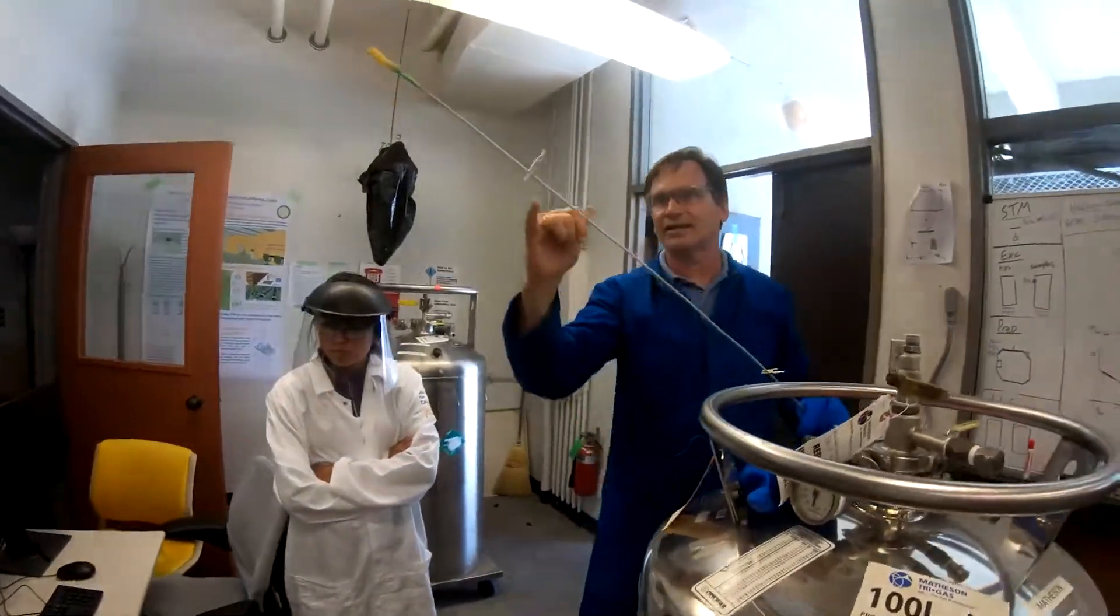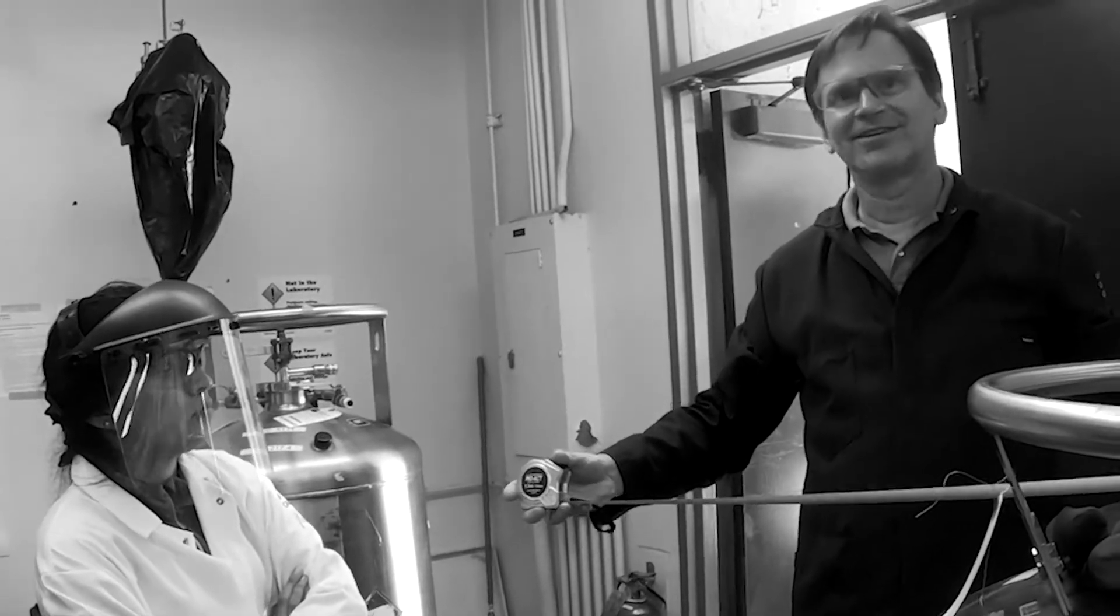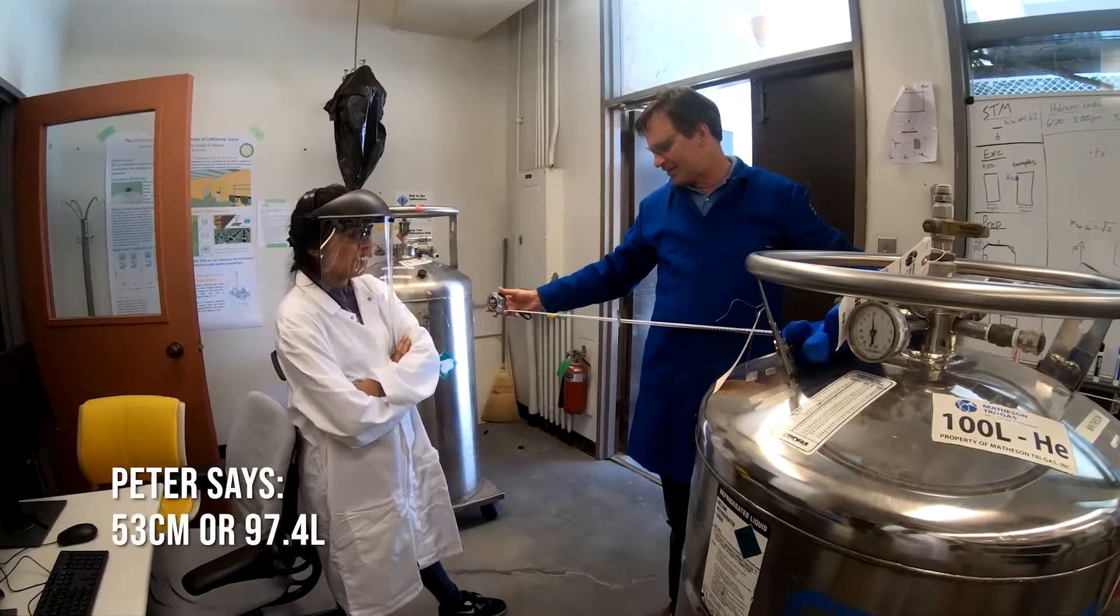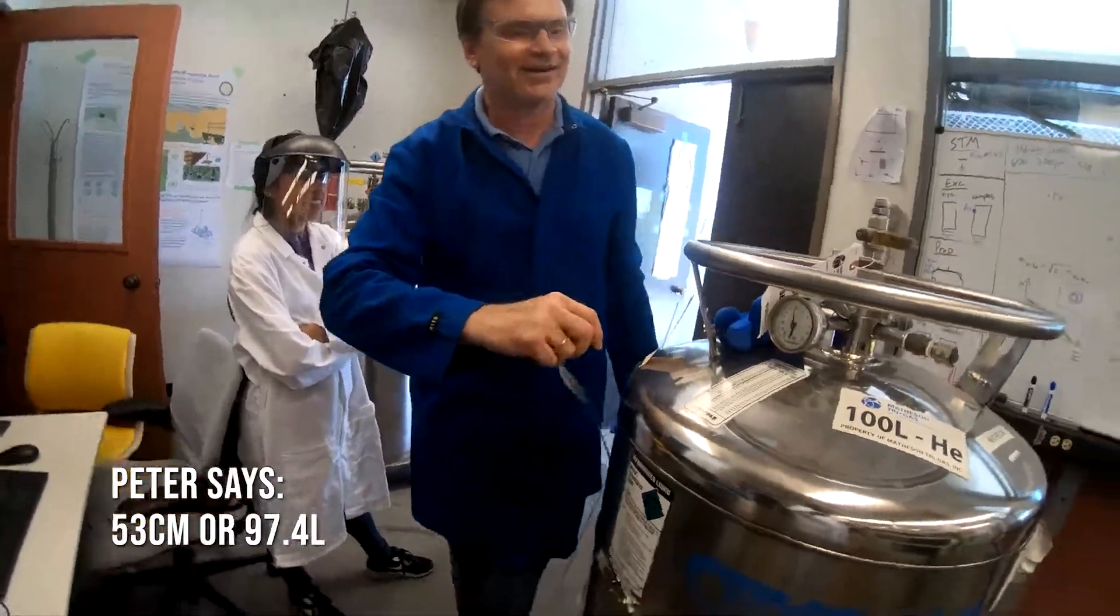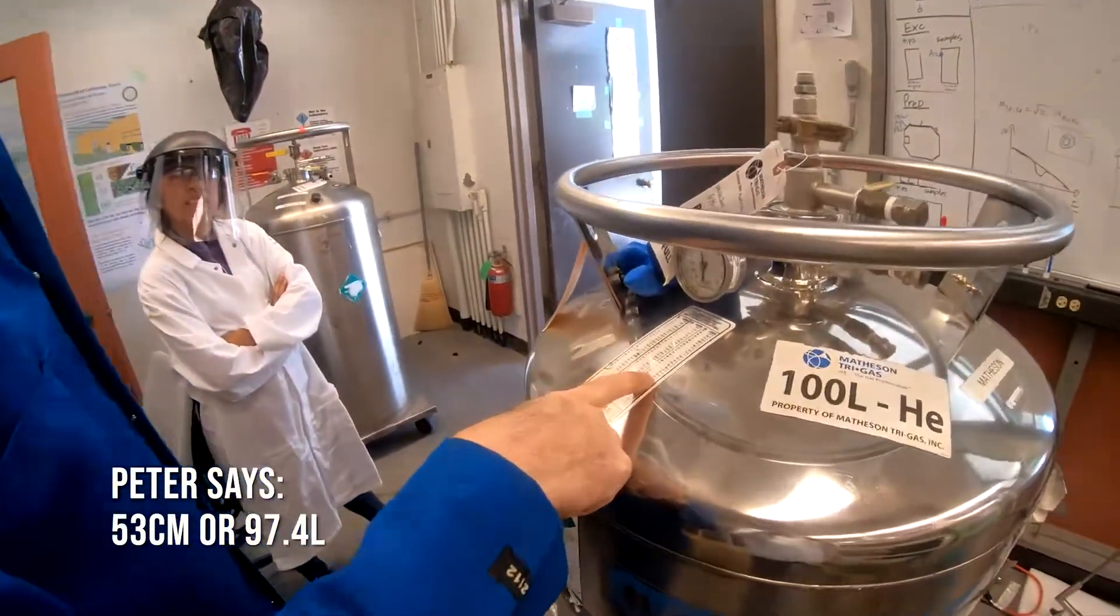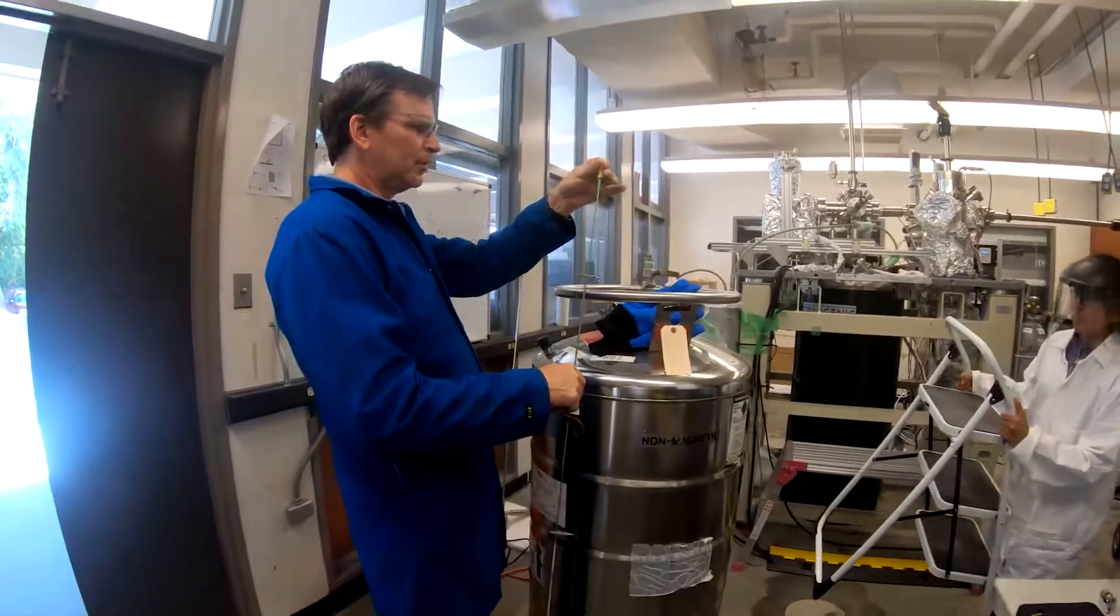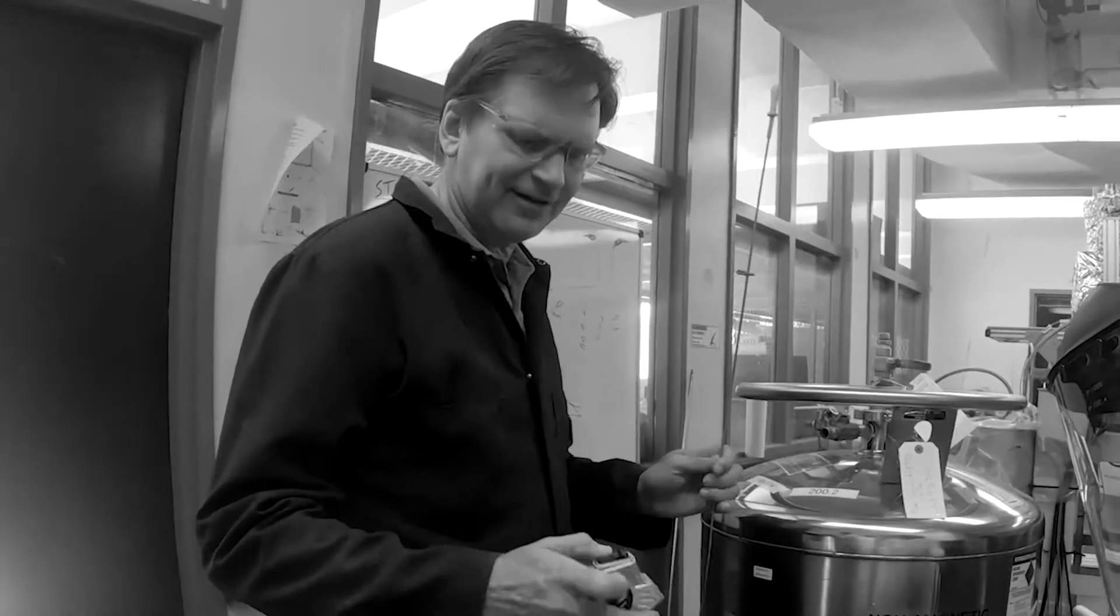We can use a meter stick. We've been doing centimeters. Oh, this is in centimeters. I've never seen one of these. So we have 53 centimeters. So we will look on our chart right here. 53 centimeters is 97.4 liters. So it's nice about these eyedropper bulbs, you can actually even hear them change frequency speed. I love this.